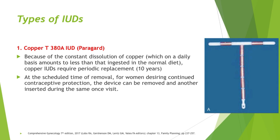There are two types of IUDs: the copper T380A IUD, brand name Paragard, and the LNG-IUS or levonorgestrel intrauterine system, brand name Mirena. For the Paragard copper T380A IUD, because of the constant dissolution of copper — which on a daily basis amounts to less than that ingested in a normal diet — copper IUDs require periodic replacement every 10 years. At the scheduled time of removal, for women desiring continued contraceptive protection, the device can be removed and another inserted at the same visit.